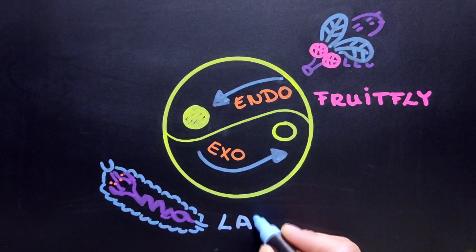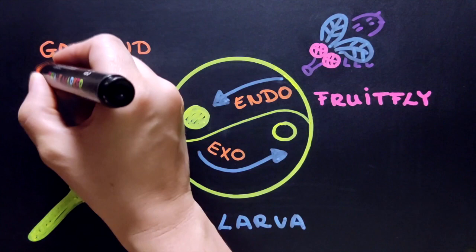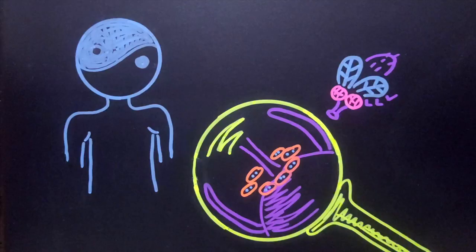Fruit fly larvae have a specialized cell type, the so-called garland nephrocytes. These are spherical, binucleated cells that surround the oesophagus and float in the body fluid.